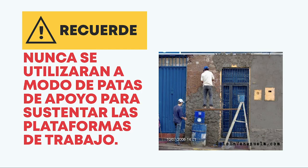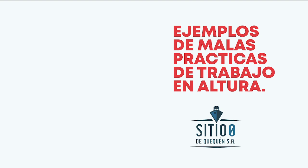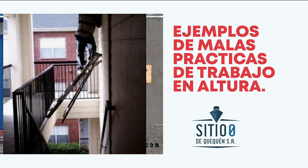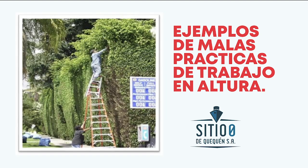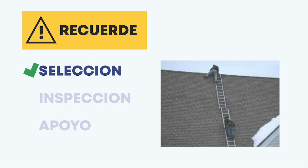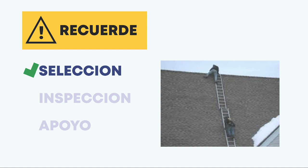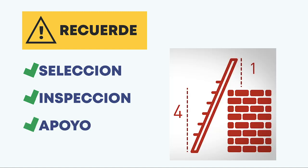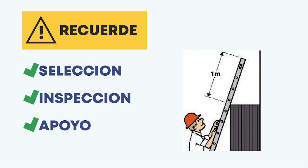Recuerde: nunca se utilizarán las escaleras de dos hojas a modo de patas de apoyo para sustentar plataformas de trabajo. Selección: no use una escalera extensible cuando haya disponible una escalera de mano u otro método más seguro. Inspección: busque rajaduras, peldaños dañados, patas faltantes, soportes doblados, sogas gastadas; reemplace o repare según sea necesario. Apoyo: coloque las escaleras de forma firme y segura en una base nivelada y estable, en el ángulo adecuado 4 sobre 1, fíjela para que no se mueva. Cuando use una escalera recta para acceder a un techo o plataforma, la escalera se debe extender un metro más allá del área de descenso.